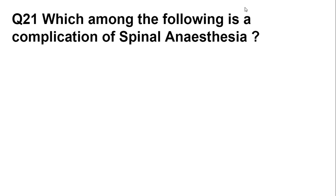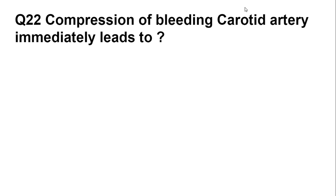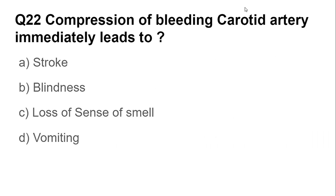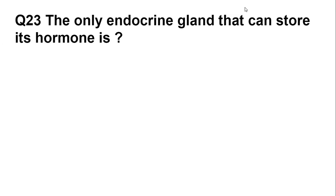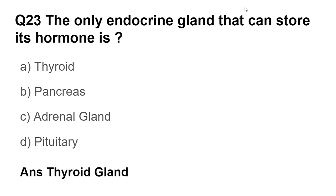Question number twenty-one: a complication of spinal anesthesia is hypotension — blood pressure is low at that time. Question number twenty-two: compression of the bleeding carotid artery immediately leads to a risk of stroke. Question number twenty-three: the only endocrine gland that can store its hormone is the thyroid gland.